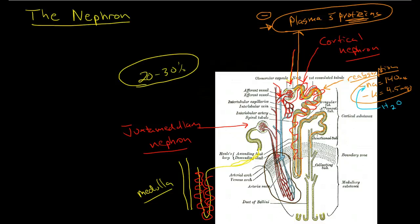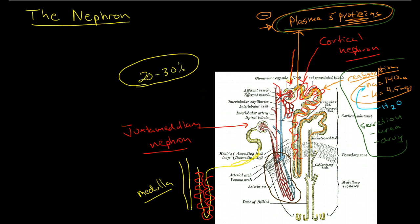Now, the other thing that's occurring, in addition to reabsorption, is secretion. Because there's some things, like urea and larger molecules, many drug metabolites, hormone metabolites, that actually don't get filtered because they're too big and they're too charged to make it through the glomerulus. So they actually need to be excreted in the tubules of the kidney.